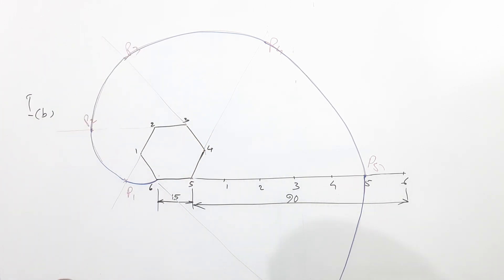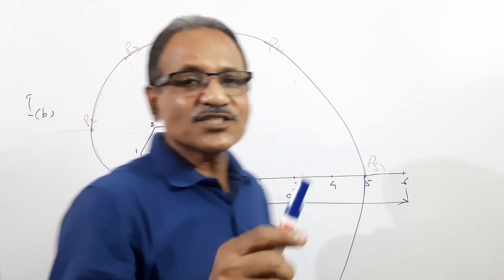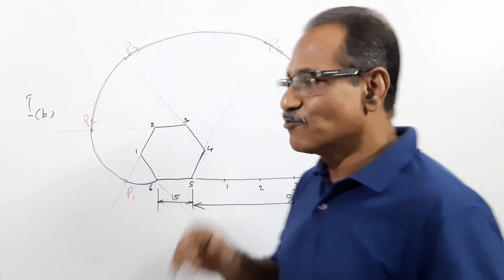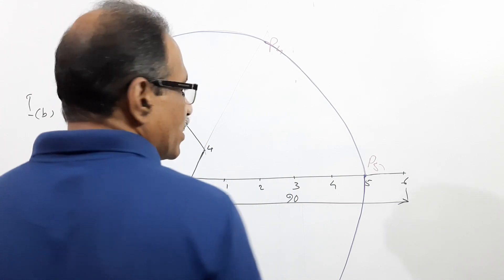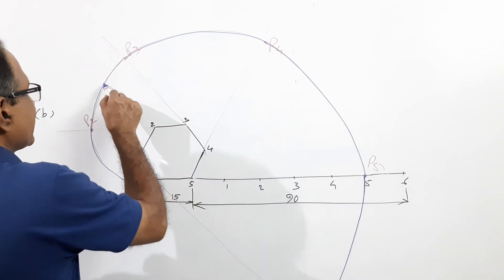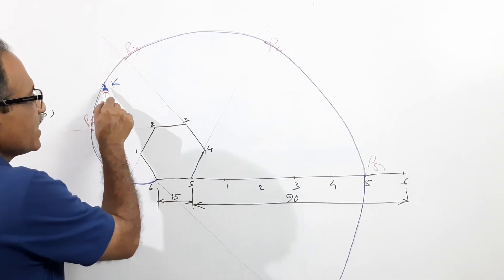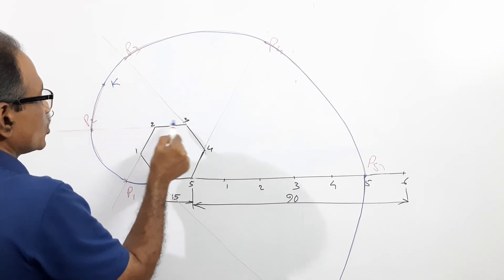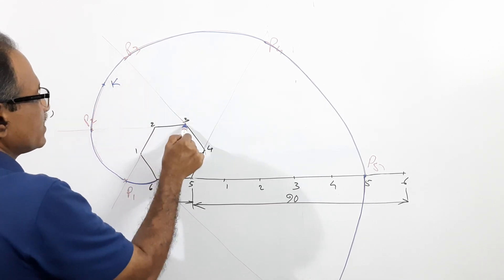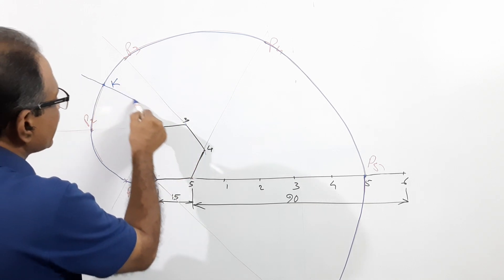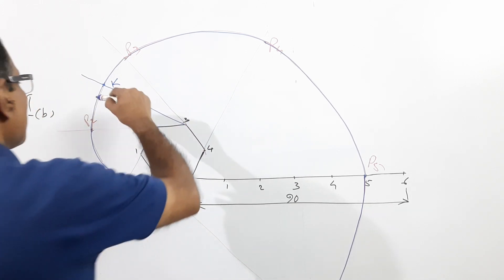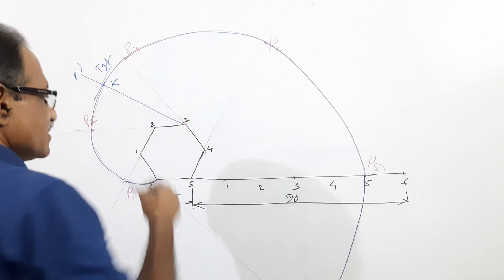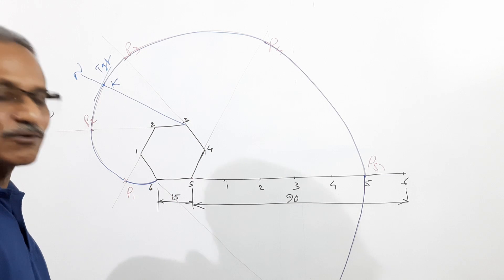This is the involute of a hexagon. If you are asked to draw normal and tangent at any point K, join K to the center with which that part of the curve was drawn. For example, if the curve was drawn with 3 as center, join K to vertex 3 — that line is the normal. A perpendicular to that is the tangent.